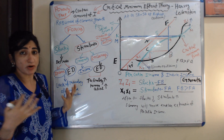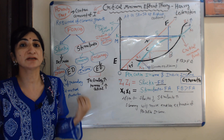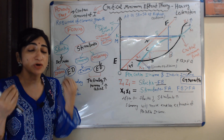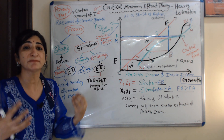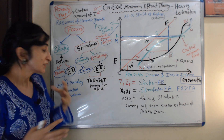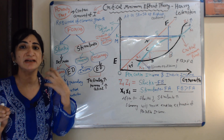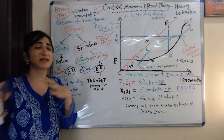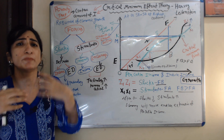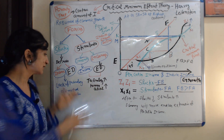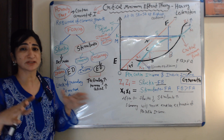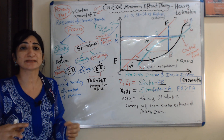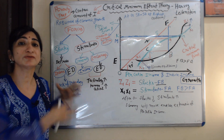Shocks are income depressing forces — they basically reduce the income of any economy and depress economic development. For example, if a country lacks technology, lacks new methods or new inventions, and is using old methods of production while all other countries are becoming advanced, the income and economic development of that country will depress.